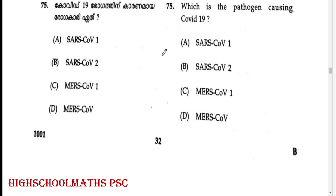Which is the pathogen causing COVID-19? Answer: Option B — SARS-CoV-2.